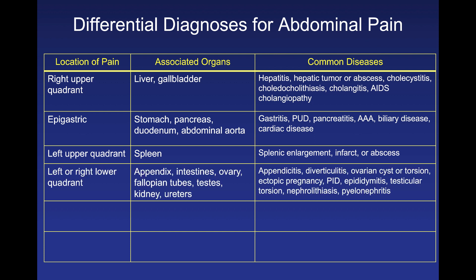Left or right lower quadrant pain can involve the appendix and intestines. In women, think about the ovary and fallopian tubes; in men, the testes. Also remember the genitourinary system, including the kidney and ureter. Consider appendicitis, diverticulitis, ovarian cysts, or torsion. In younger sexually active women, think ectopic pregnancy or pelvic inflammatory disease. In men, don't forget epididymitis and testicular torsion. If there's a history of stone disease, consider nephrolithiasis, and look for flank pain suggesting pyelonephritis.